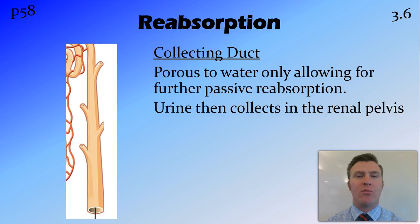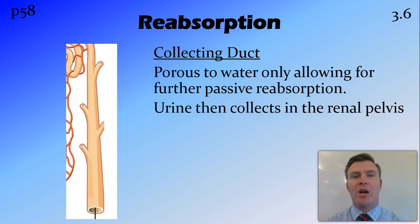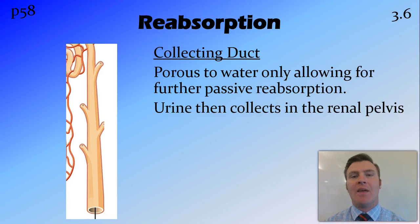So by the time we get through the nephron, we've gone from blood to filtrate in the Bowman's capsule, and then to urine once it hits the collecting ducts.